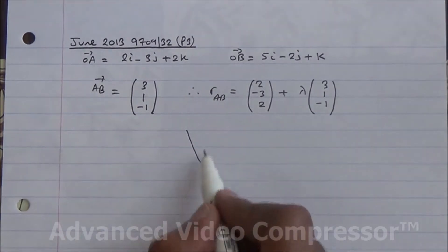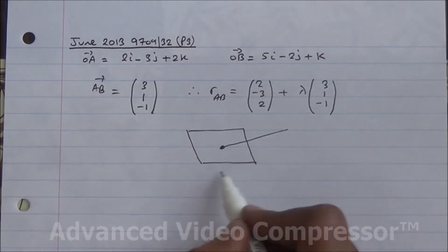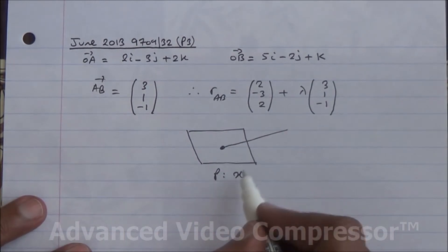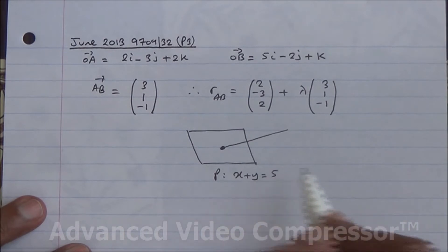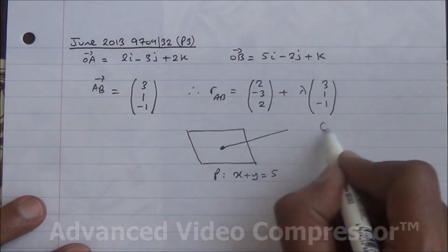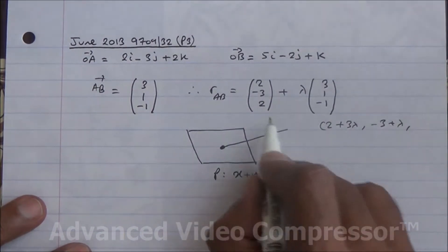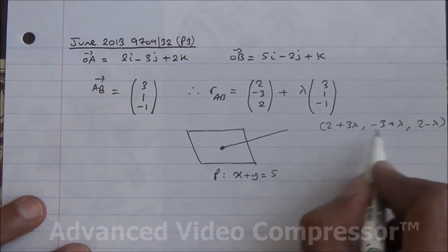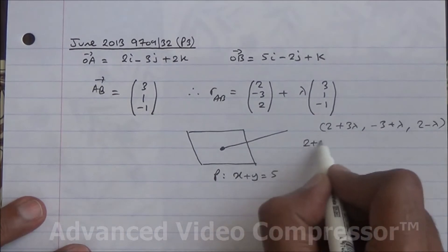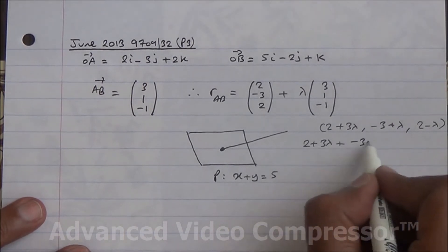A general point on the line intersects with the plane. The plane P has equation x + y = 5. Taking the general point on the line: x = 2 + 3λ, y = -3 + λ, and z = 2 - λ. We substitute these coordinates into the equation of the plane, giving (2 + 3λ) + (-3 + λ) = 5.